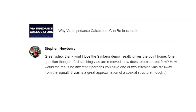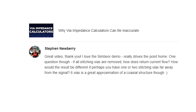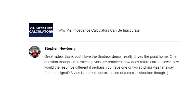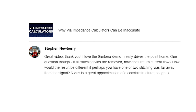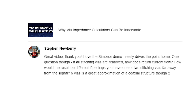First things first, we've got a great question on our recent via impedance calculator video from Stephen Newberry. Stephen writes: great video, thank you. I love the Symbiore demo, really drives the point home. He then goes on to ask: if all stitching vias are removed, how does return current flow? And how would the result be different if you have one or two stitching vias far away from the signal?